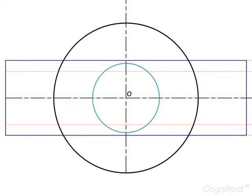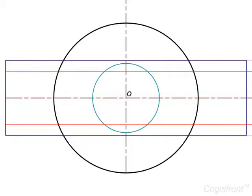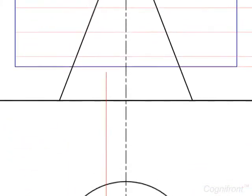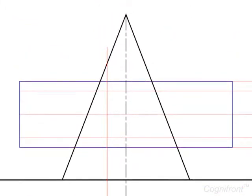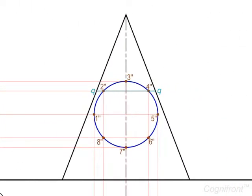Now project the points 2-double-dash and 4-double-dash from the side view to cut this circle at A2, B2 and A4, B4 in the top view. Then project the points A2 and A4 vertically to the front view, cutting the horizontal projectors drawn from 2-double-dash and 4-double-dash at A2-dash.